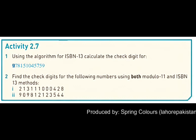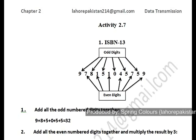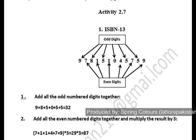Today I'm going to solve Activity 2.7. In question 1, you have been given a number and you are supposed to find out the check digit using the ISBN-13 method.